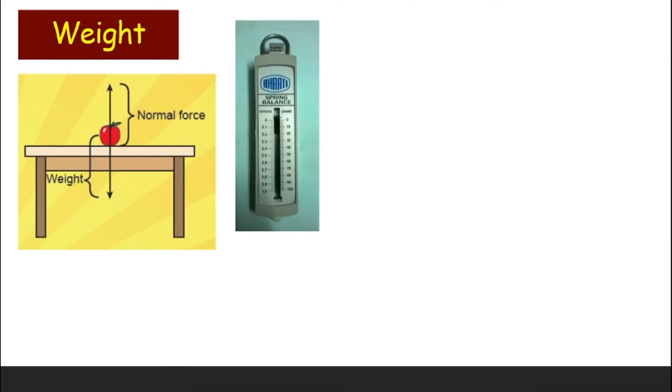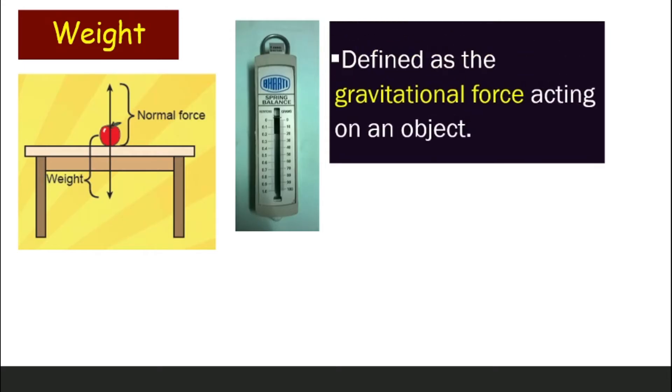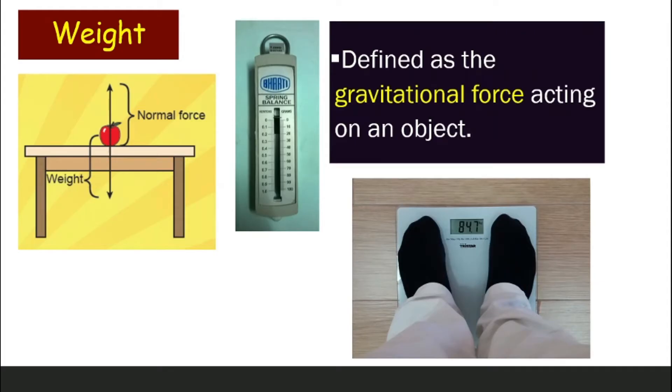Next is Weight. Weight is actually Gravitational Force that is acting on an object. In order to measure weight, we use Spring Balance as it is shown here in the picture. What about when you find out how heavy you are? Are you weighing yourself? Is that your body weight? No, that actually is not your weight. That is your mass. That is body mass. The weight is the Gravitational Force. It is not how heavy you are.